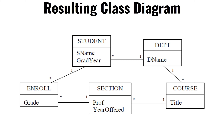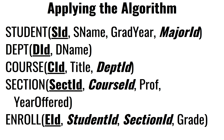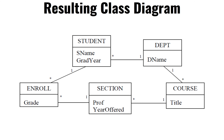On the Student side, the foreign key is major ID; on the Course side, the foreign key is department ID. On the Section, you have a primary key and then a foreign key to the Course — that means on the Section side you get a star, and on the Course side you get a one.